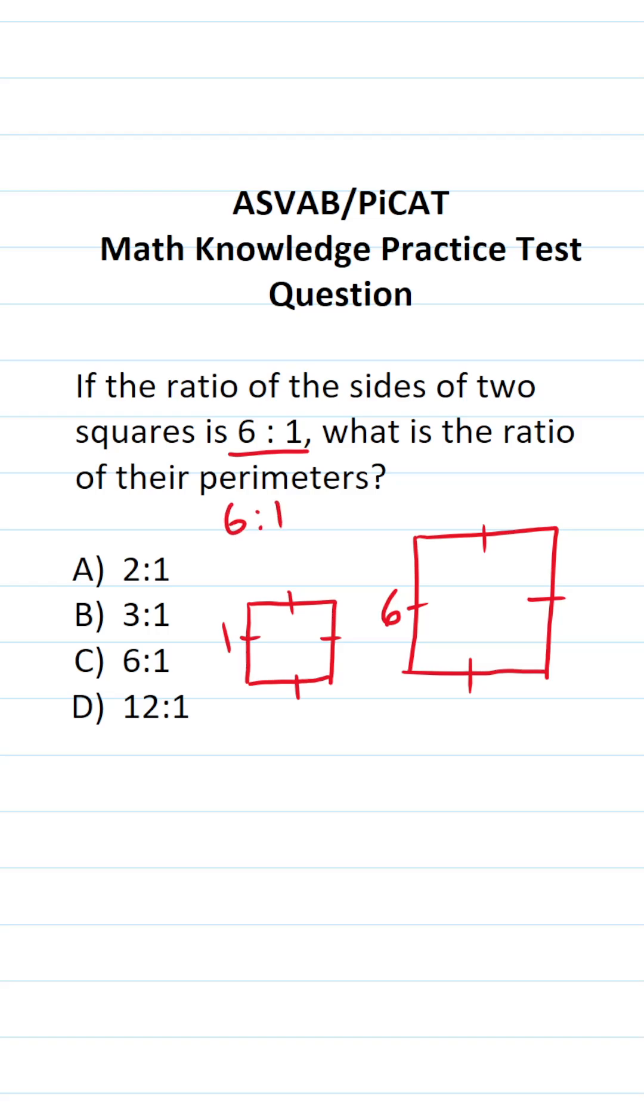Now we want to know what the ratio of their perimeters is. If this side's one, all these other sides are going to be one. If this side's six, all these other sides are going to be six.